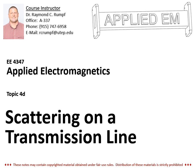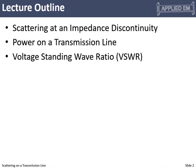Scattering on a transmission line. The topics in this video: scattering at an impedance discontinuity and calculating a reflection coefficient. That leads into a discussion about power on a transmission line and then the voltage standing wave ratio. This is analogous to when we talked about plane waves — we had a standing wave ratio. Now on a transmission line, since we're doing things in terms of voltage and current, we call this a voltage standing wave ratio, or VSWR.